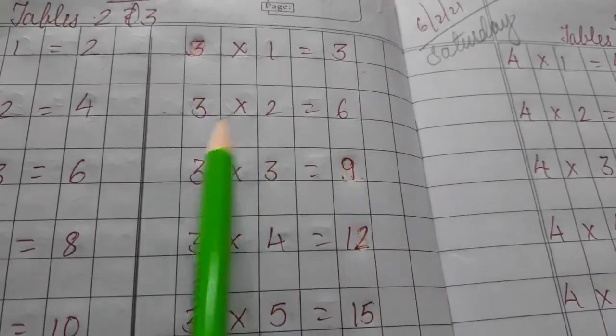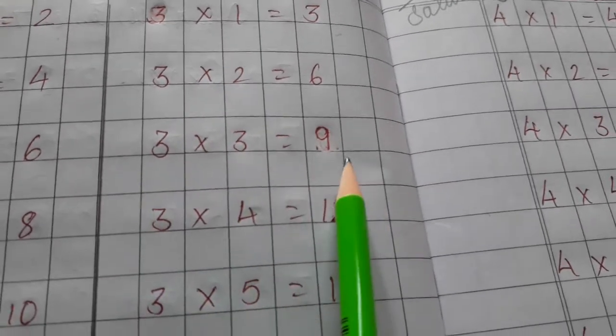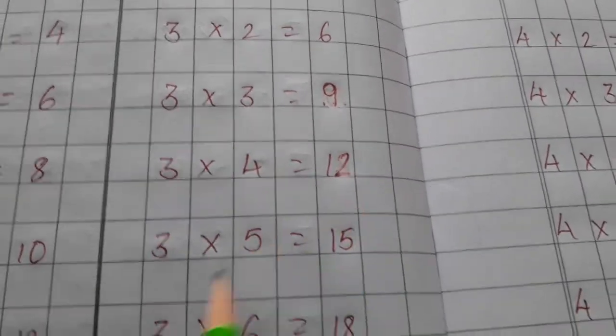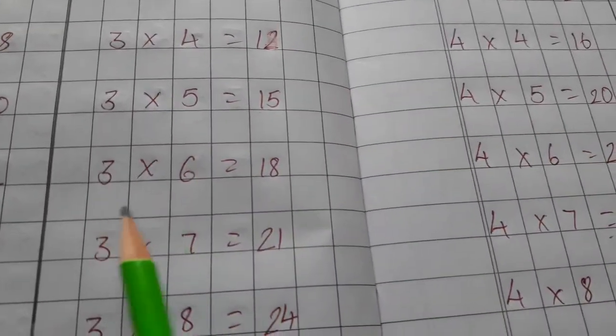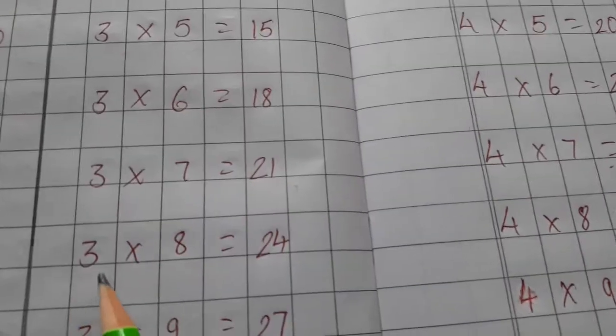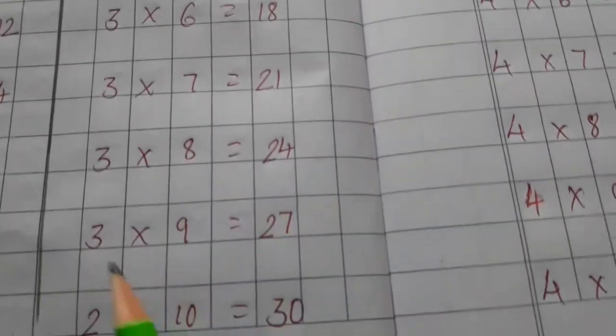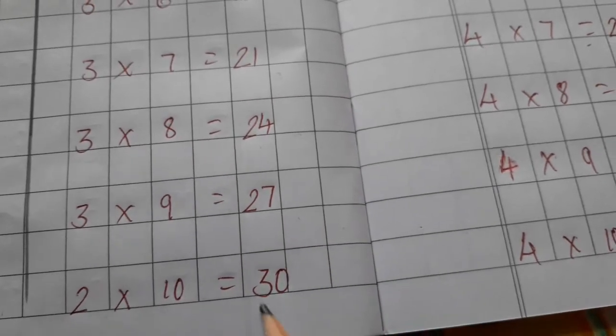3 ones are 3, 3 twos are 6, 3 threes are 9, 3 fours are 12, 3 fives are 15, 3 sixes are 18, 3 sevens are 21, 3 eights are 24, 3 nines are 27, 3 tens are 30.